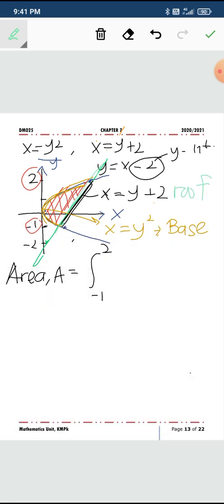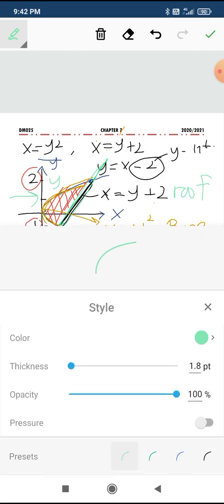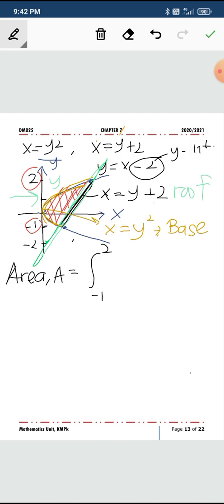And this is the roof. So you can see the top most. If you see from the Y point of view, you will write the top one will be this: Y plus 2 minus Y squared. And you integrate.